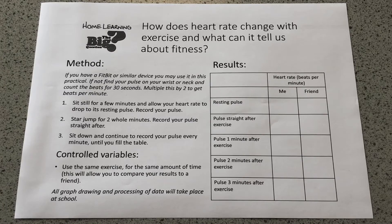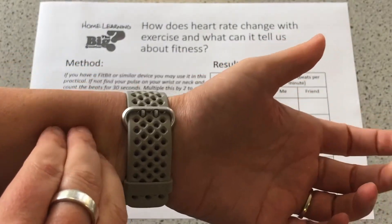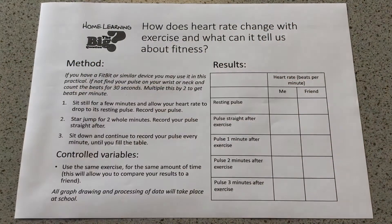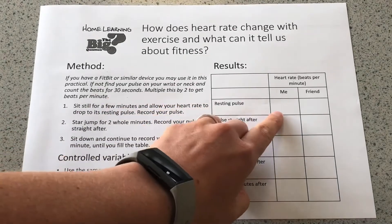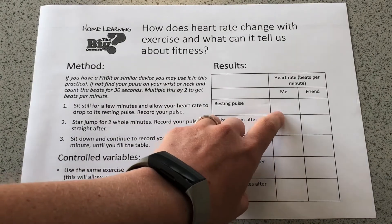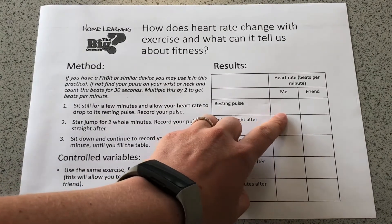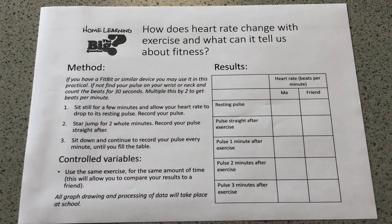If you have a Fitbit or a similar device you can use this in the practical to find your pulse rate. If not, you're going to find your pulse in your wrist or in your neck, or you can hold your heart, count the beats for 30 seconds, multiply that by two, and then you'll get your heart rate in beats per minute to put into the table.